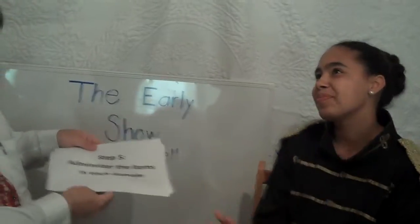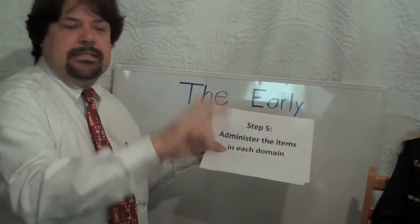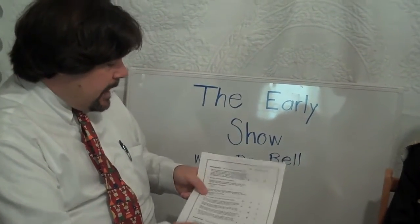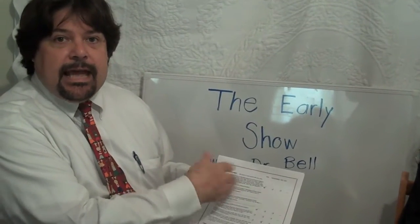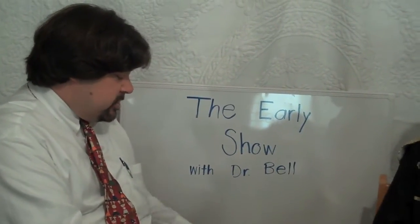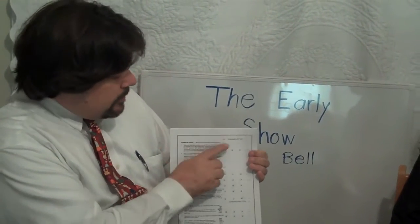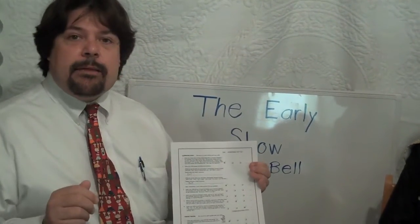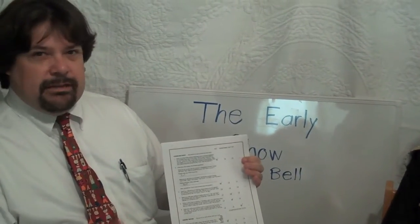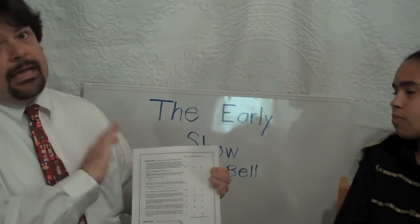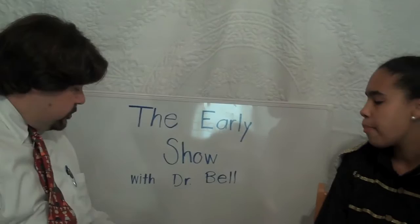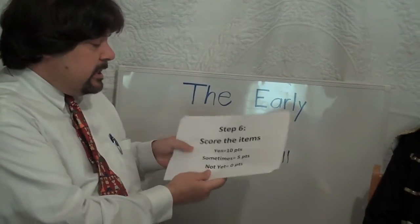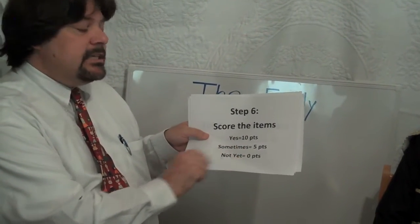Thank you, Ms. Jackson. I like you, so you can call me Janet now. Thank you, Janet. Step five is to administer the items. You won't see that on film to save time, but I went through each domain and asked the child the questions and had them do the tasks, then put a check mark in the appropriate box. In this tool there are three boxes to choose from: yes, meaning the child can do it consistently without any support; sometimes, if they needed it repeated a few times or took a couple of tries; and not yet, meaning they just didn't get it.